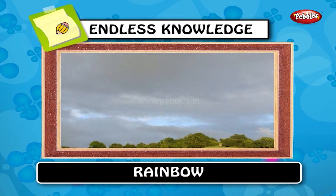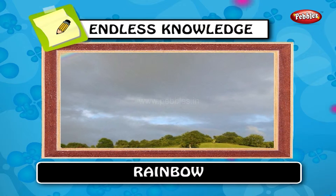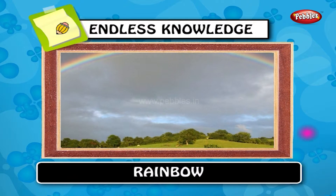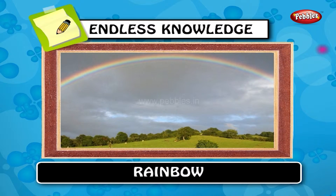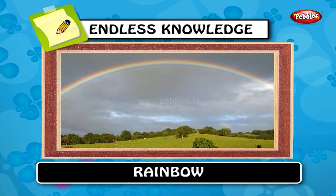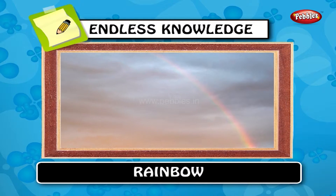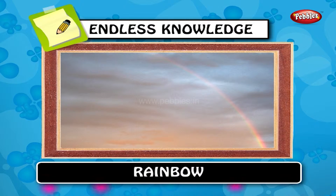Rainbow. A rainbow is an optical and meteorological phenomenon that causes a spectrum of light to appear in the sky when the sun shines onto droplets of moisture in the earth's atmosphere.